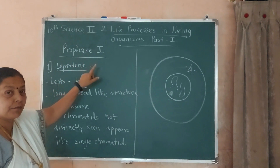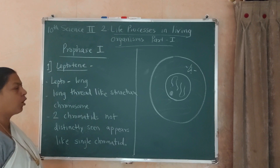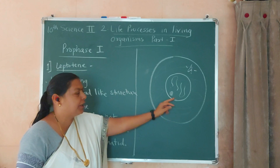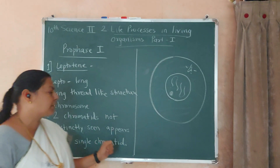The 1st step in prophase 1st is leptotene. The word itself means 'long thread.' In leptotene, long thread-like structures of chromosomes are observed and formed here.